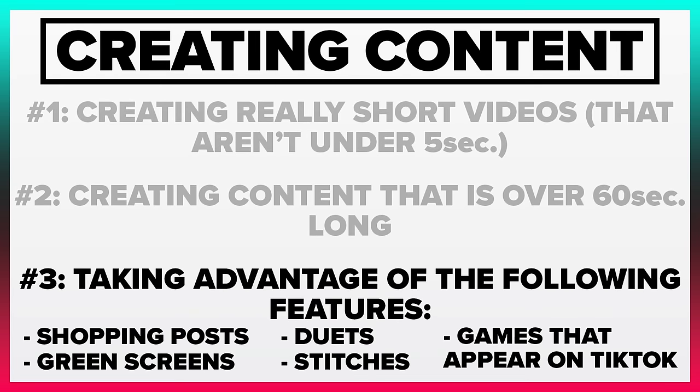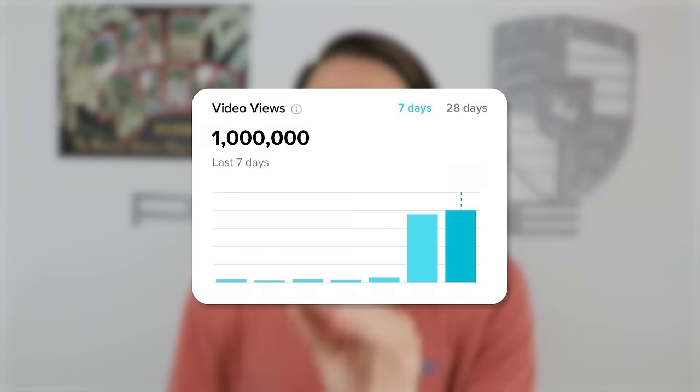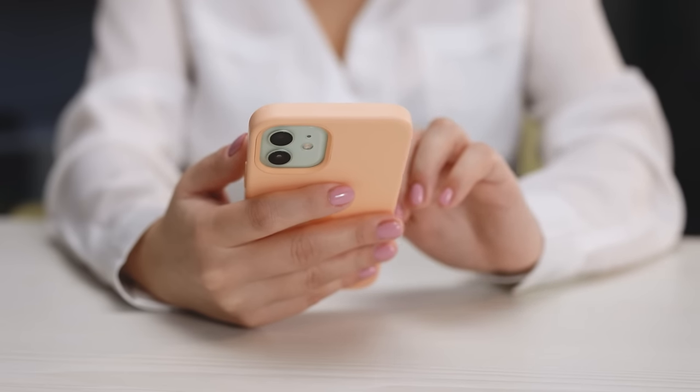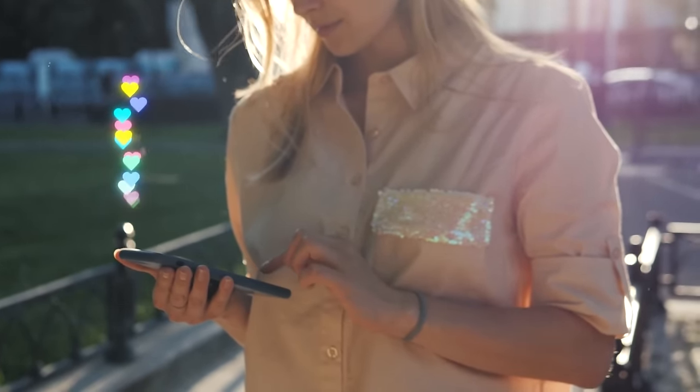You also need to be posting shopping posts, green screen posts, duets, stitches, and playing the games that pop up on TikTok — because they have a hook built into them, they keep people on the platform for a really long time, and so many people interact with posts like that. If you create posts like that, you're going to get more views. But make sure those things are trending within your niche. If you can't find any examples of how to implement those things within your niche, then you should instead be doing the formats and topics that show up after you search for what's actually trending within your niche or find a small account that got more views than followers using those methods.